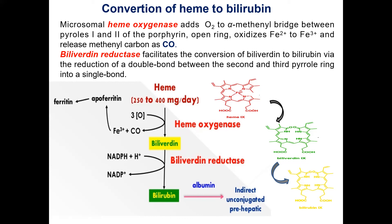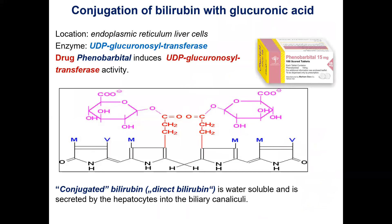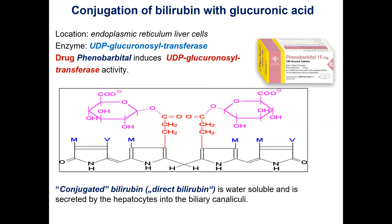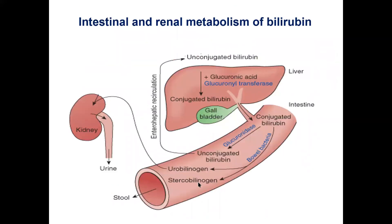Serum albumin carries bilirubin in circulation as a ligand to hepatocytes. In the liver, bilirubin is conjugated with glucuronic acid. The conjugation of bilirubin is catalyzed by a specific glucuronosyltransferase, which uses UDP-glucuronic acid as the glucuronosyl donor. The product of conjugation, conjugated or direct bilirubin, is water-soluble and is secreted by hepatocytes into the intestines.